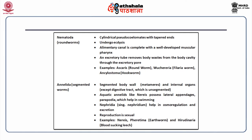Phylum annelida, otherwise known as segmented worms, have a segmented body wall known as metameres, with internal organs except the digestive tract being unsegmented. Aquatic annelids like nereis possess lateral appendages called parapodia which help in swimming. Nephridia help in osmoregulation and excretion. Reproduction is sexual. Examples include nereis, pheretima and hirudinaria.